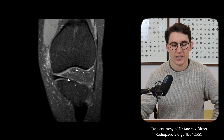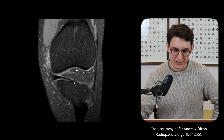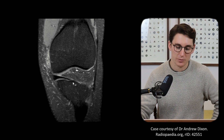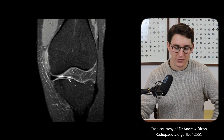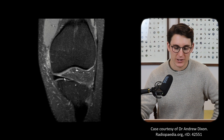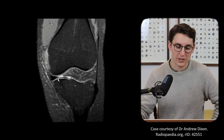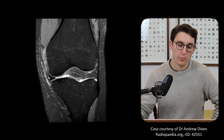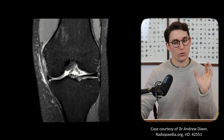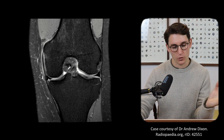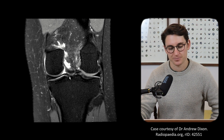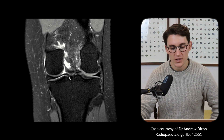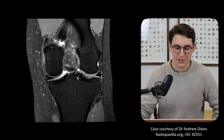Let's start anteriorly on the medial meniscus. We can see the attachment to the tibia — this is the anterior root of our medial meniscus. Following that around, this is our anterior horn of the medial meniscus coming into the body. The body heads all the way back before curving round into our posterior horn of the medial meniscus, and then attaching at the posterior root. We're going to look at these again in the sagittal plane.